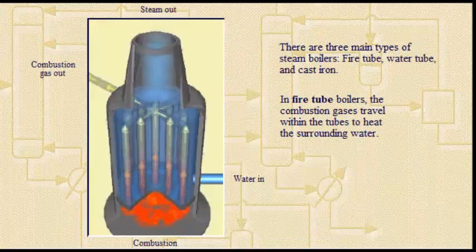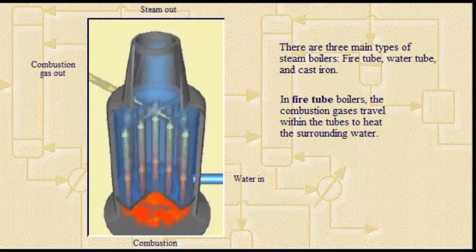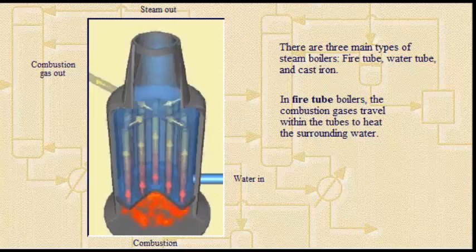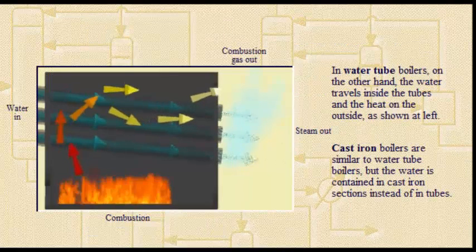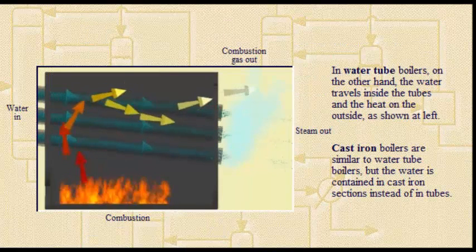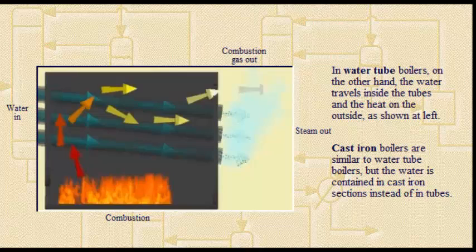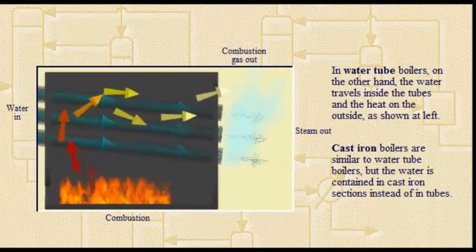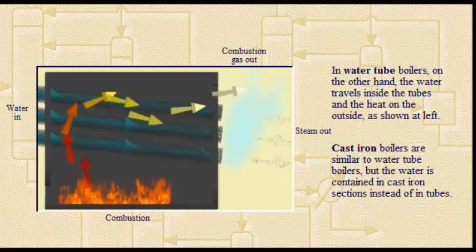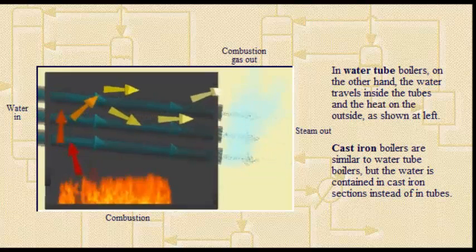There are three main types of steam boilers: fire tube, water tube, and cast iron. In fire tube boilers, the combustion gases travel within the tubes to heat the surrounding water. In water tube boilers, the water travels inside the tubes. Cast iron boilers are similar to water tube boilers, but the water is contained in cast iron sections instead of in tubes.